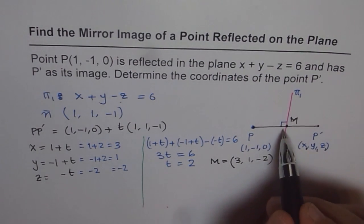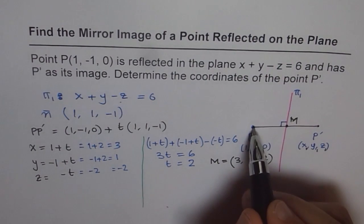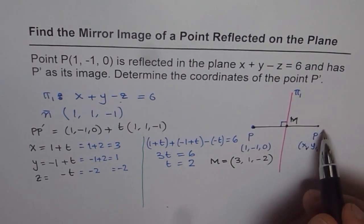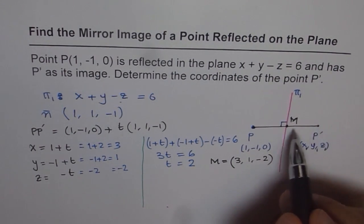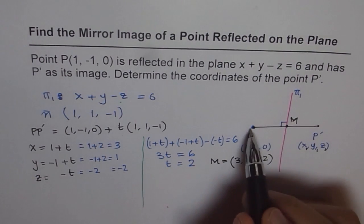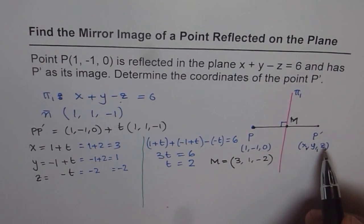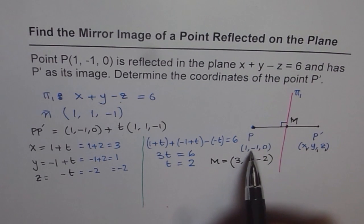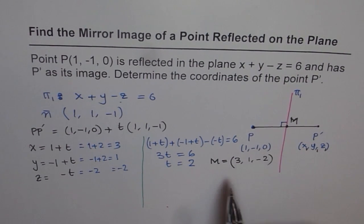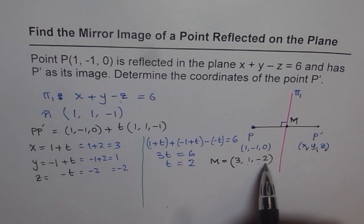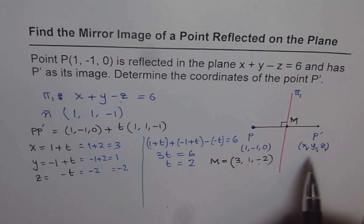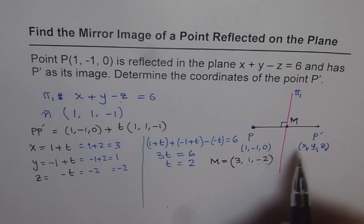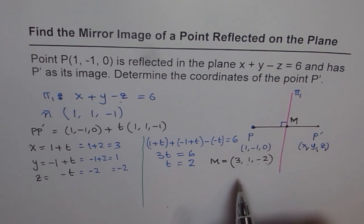Since we know coordinates of M and coordinates of P, it is easy to find P dash, because M is the midpoint of P and P dash. We know P is (1, -1, 0) and M is (3, 1, -2). Let P dash be (x1, y1, z1). The average of P and P dash should equal M.